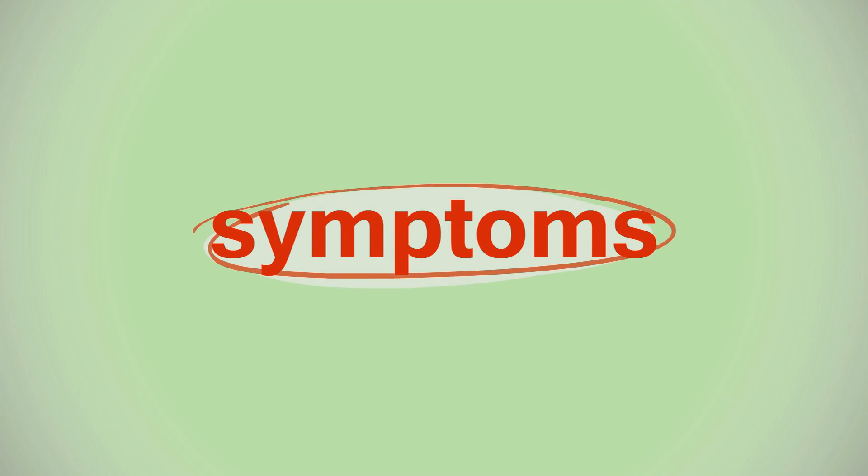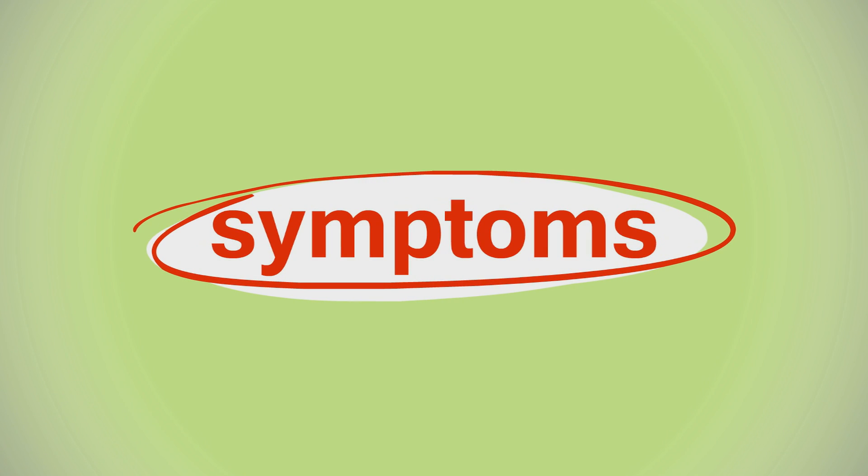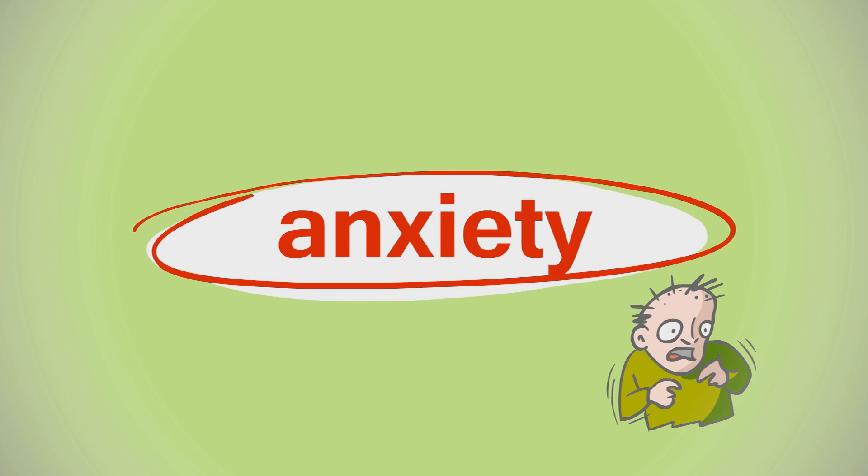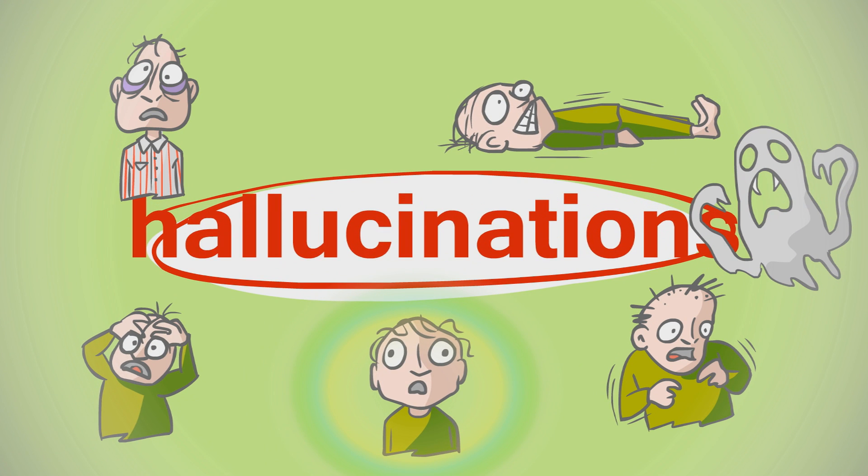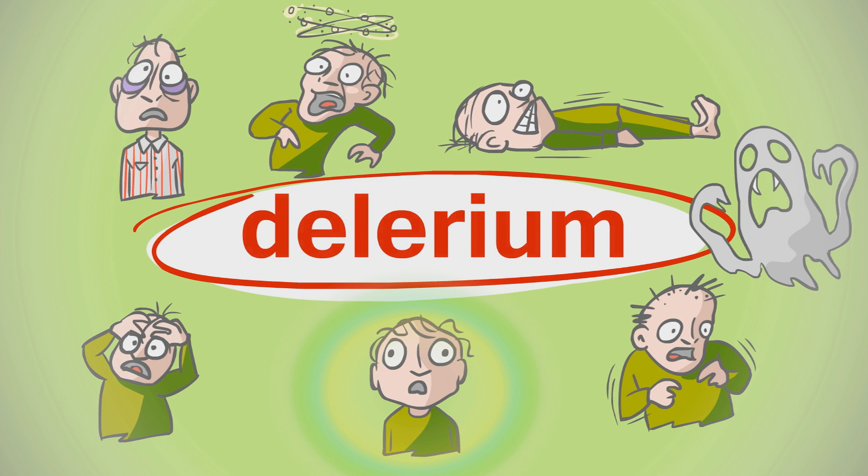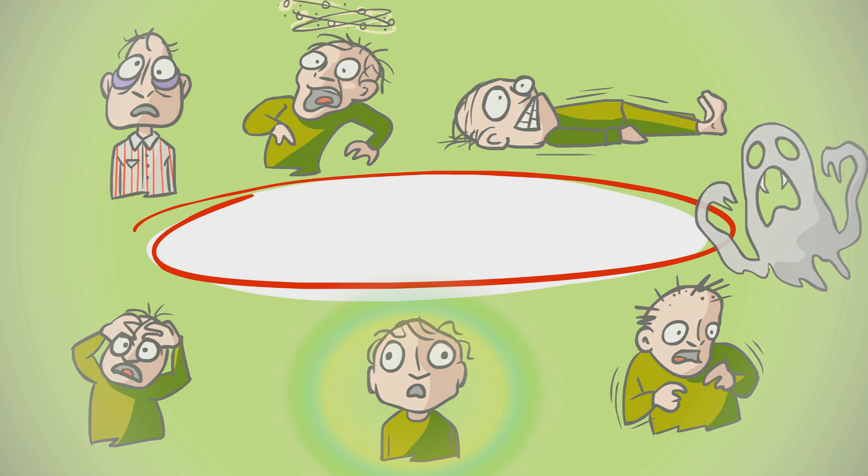The symptoms of an infected individual can vary. They start off with flu-like symptoms, and then they can get anxiety, insomnia, paralysis, paranoia, terror, hallucinations, and eventually delirium. Basically, they go absolutely crazy.